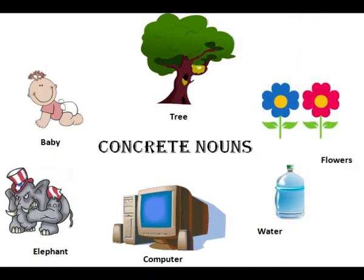Let's look at another picture of a concrete noun. In this picture you can see a tree, flowers, a bottle filled with water, a computer, an elephant and a baby. You can notice that we can use our five senses to identify each picture. Therefore, we can see, hear, taste, touch and smell all these objects given in this picture.